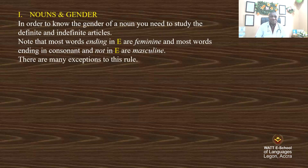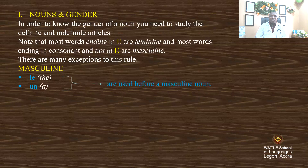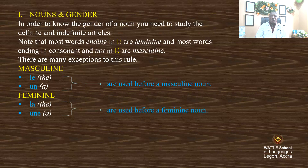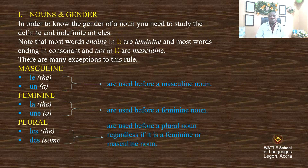There are many exceptions to this rule. Masculine: le, un — these articles are used before a masculine noun. Feminine: la and une — these articles are used before a feminine noun. Plural: les and des — these articles are used before plural nouns, regardless of the gender, whether feminine or masculine.